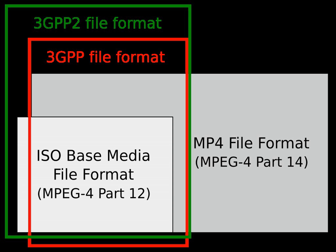If an existing specification already covers how a particular media type is stored in the file format, e.g. MPEG-4 audio or video in MP4, that definition should be used and a new one should not be invented. MPEG has standardized a number of specifications extending ISO Base Media File Format. The MP4 file format ISO/IEC 14496-14 defined some extensions to support MPEG-4 visual and audio codecs and various MPEG-4 systems features such as object descriptors and scene descriptions. The MPEG-4 Part 3 standard also defined storage of some audio compression formats, including storage of MPEG-1 audio in ISO Base Media File Format, defined in ISO/IEC 14496-3:2001 AMD 3:2005.